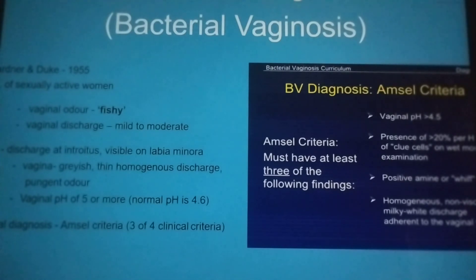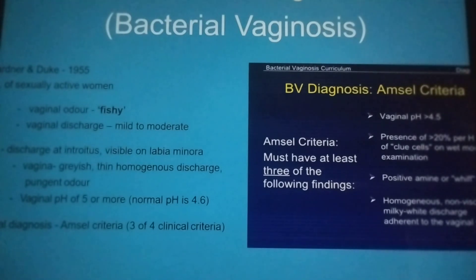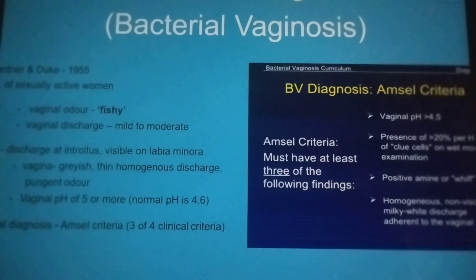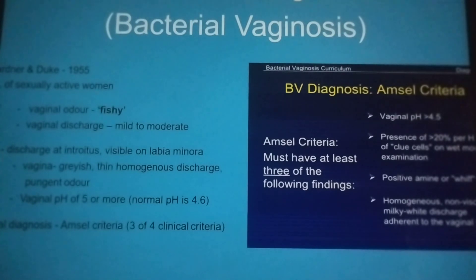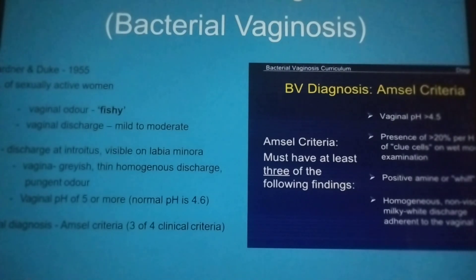How do you diagnose bacterial vaginosis? The patient will come to you with a complaint of vaginal odour that is fishy or foul-smelling. They will complain of mild to moderate vaginal discharge that is sometimes grayish in color. On examination, you will find discharge at the introitus and it is visible on the labia minora. It is grayish, thin, homogenous discharge with a pungent odour. A vaginal pH of 5 or more is diagnostic because the normal pH is less than 4.5.